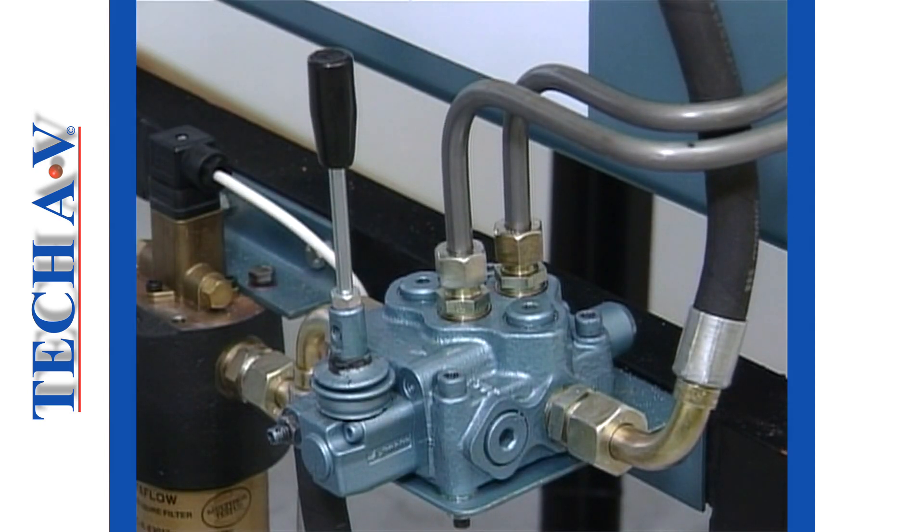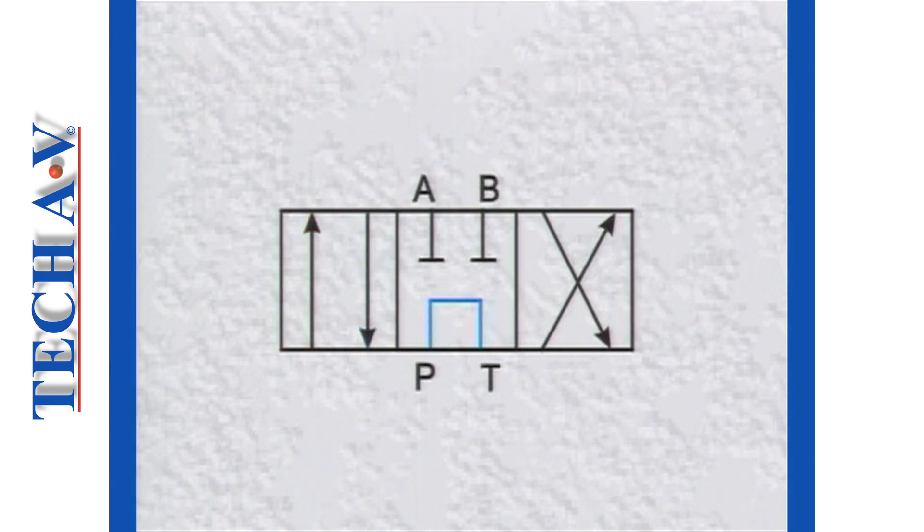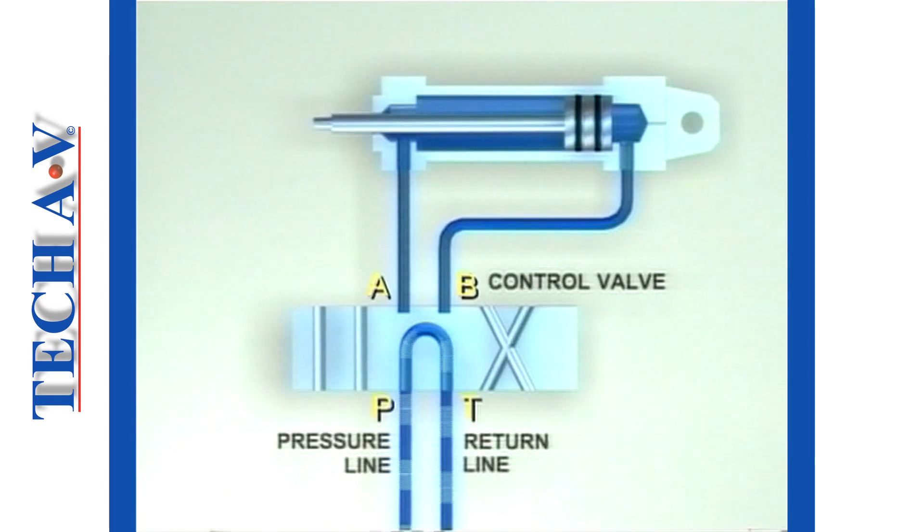In the center, or neutral position, oil flow from the pump is routed directly back to the tank. Both the A and the B ports are blocked. In this position, the pump's delivery is diverted back to the tank, or, if required, could be tandemed to another control valve.